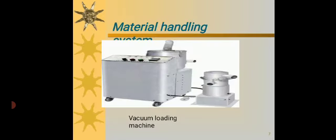Coming to the various considerations for the pilot plant production of tablets. Firstly, the first part that is considered is the material handling system. This is the image of the vacuum loading machine.